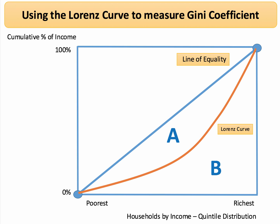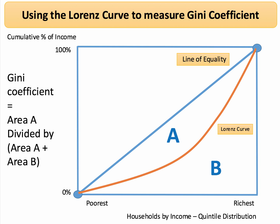The Gini coefficient is calculated using Lorenz curve data and is just a number. It is area A — the area between the Lorenz curve and the line of equality — divided by the area A plus B. So the more skewed this curve is, the greater will be area A relative to area A plus B. This gives us the Gini coefficient.